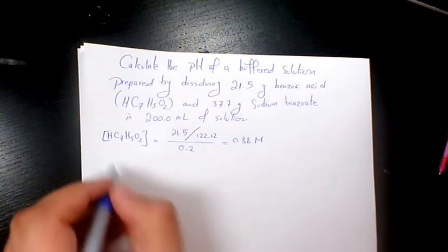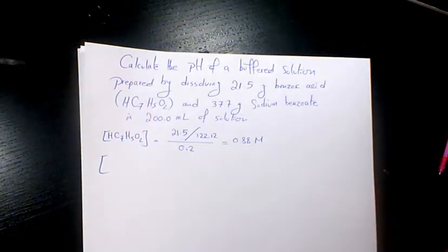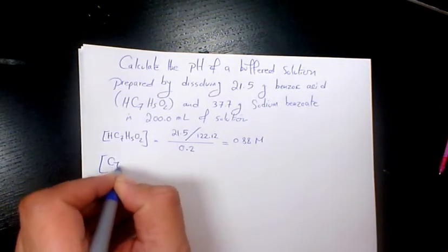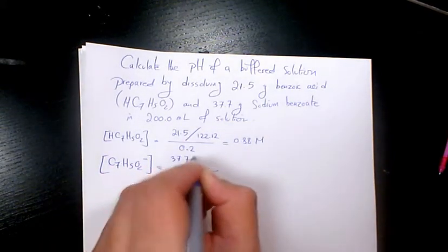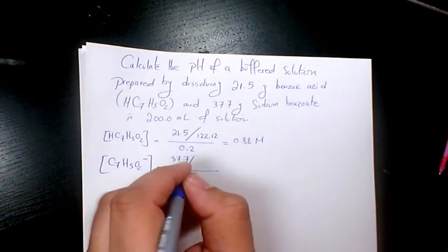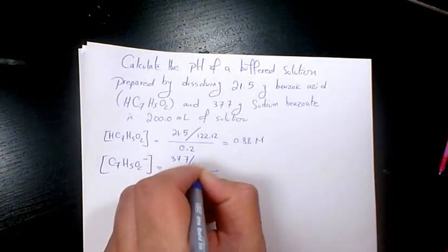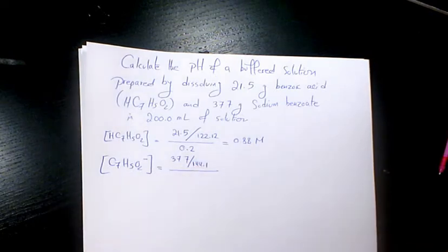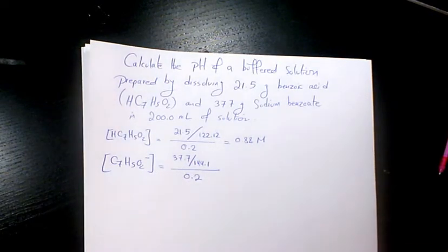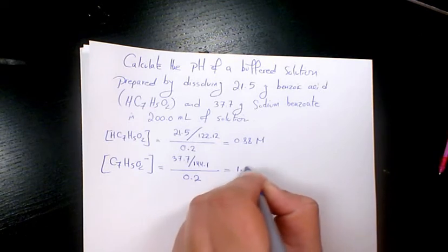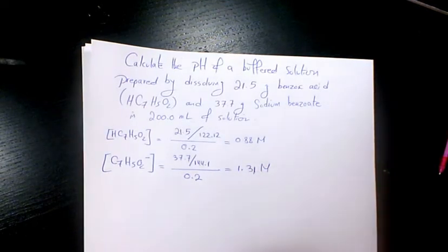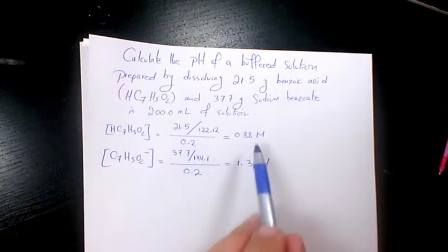And then sodium benzoate is gonna dissociate into its ions, so benzoate is gonna be C7H5O2 minus. That's 37.7 divided by molar mass, which is gonna be 144.1, divided by the volume which is 0.2 liters. So 37.7 divided by molar mass of sodium benzoate gives me 1.31 molar. So we have the concentration of these two.